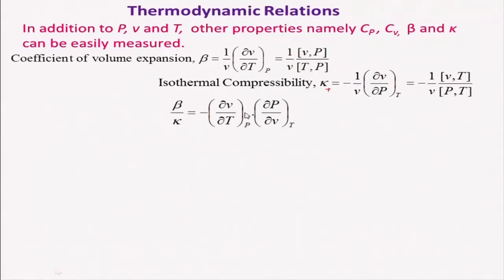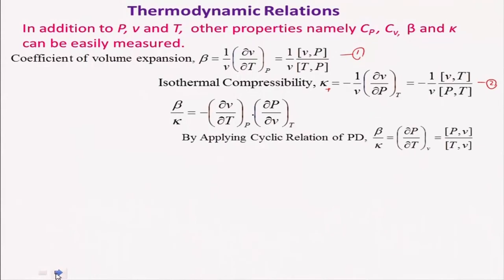Dividing the two expressions, β/K = (∂V/∂T)|P · (∂P/∂V)|T with a minus sign. Applying the cyclic relationship, this simplifies to ∂P/∂T|V. By definition, Cv = ∂U/∂T|V, and since dU = T dS − P dV, when dV is constant, T dS = dU, so Cv = T(∂S/∂T)|V = T · J(S,V; T,V).